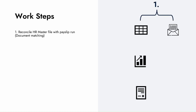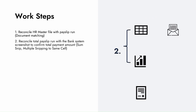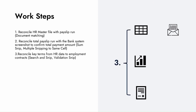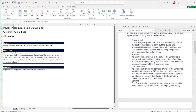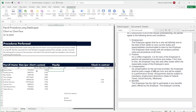For our work steps, we'll start by using document matching to reconcile the HR master file data with the payslip run. We'll then use the sum snip as well as search and snip features to reconcile the total payslip run with a bank system screenshot in order to confirm that the payment was for the correct amount. Finally, we'll use the smart search functionality to reconcile key terms from the employment contracts for a sample of users.